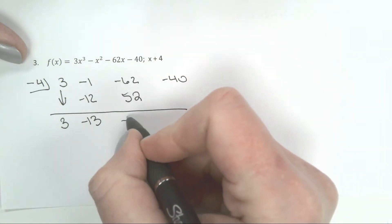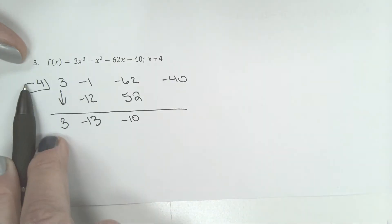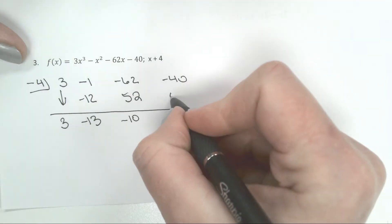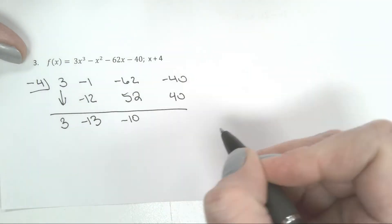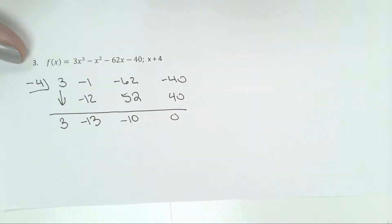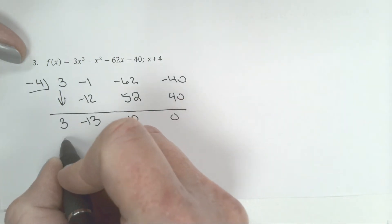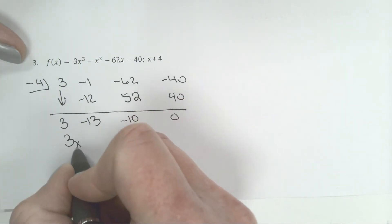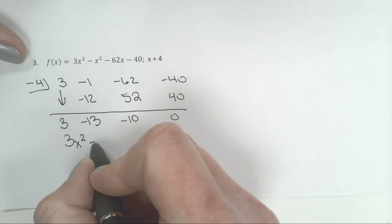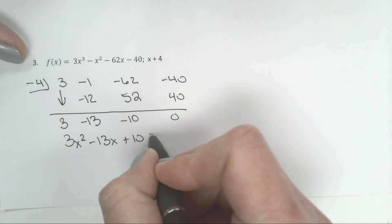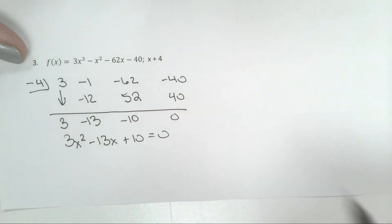That adds up to negative 10. Negative times negative equals a positive 40, and that equals 0. Put your variables back in. So I have 3x squared minus 13x plus 10 equals 0.